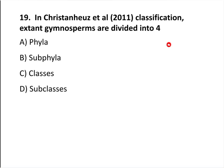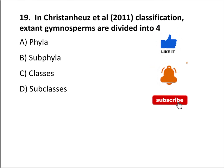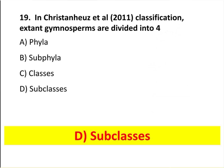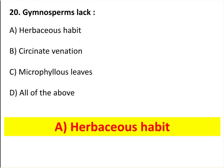In Christenhusz et al. 2011 classification, extant gymnosperms are divided into four subclasses. Gymnosperms lack herbaceous habit.